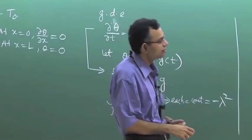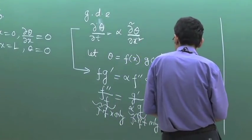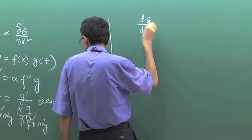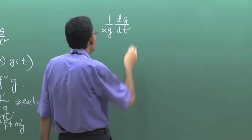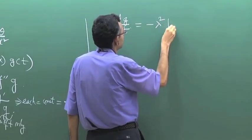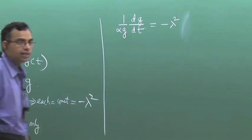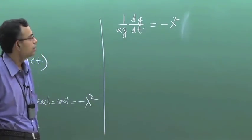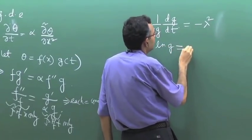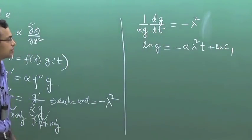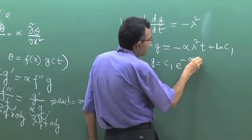Now let us apply the boundary conditions. First, let us write the solution. For the time part G: dG/dt = -alpha lambda squared G, which integrates to G = C1 times e to the power minus alpha lambda squared t. This is the time-dependent part of the solution.